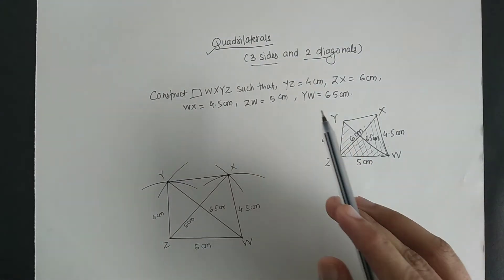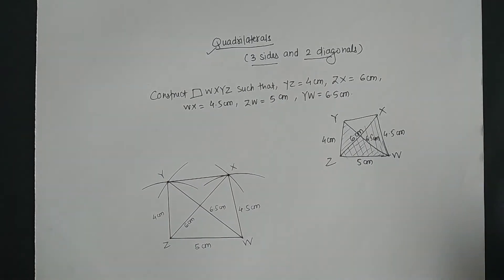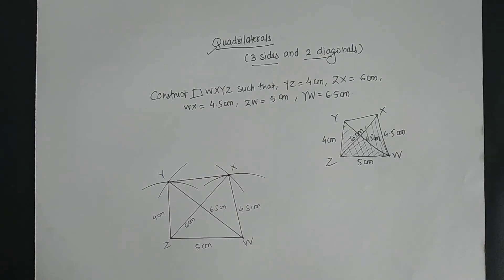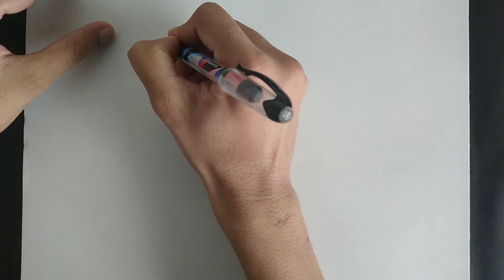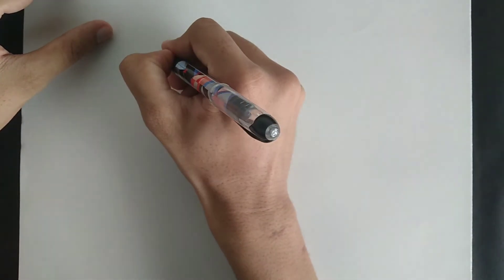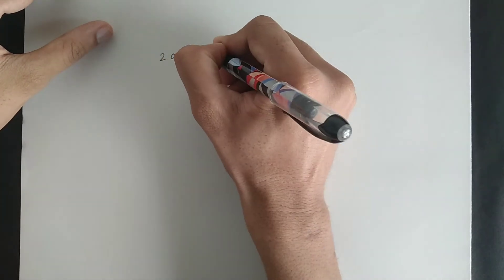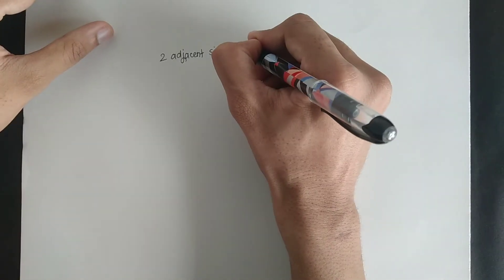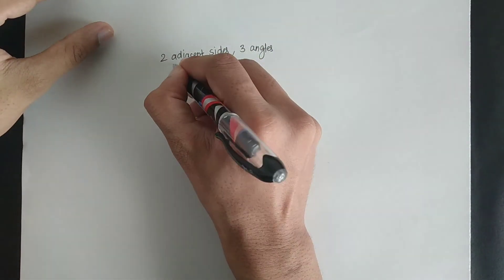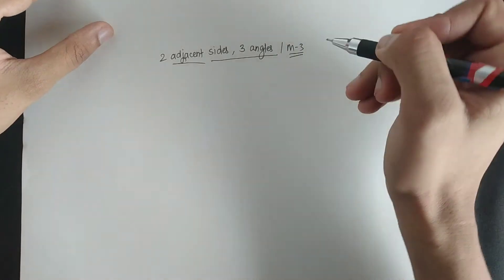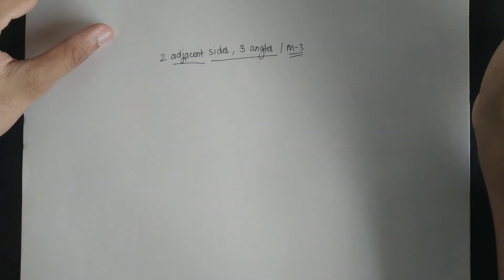This type of data leads us to Method Number Three. Now let us see how we can construct a quadrilateral with the help of an example. In this method we will have the dimension of two adjacent sides and the dimension of three angles. Let us now construct a quadrilateral using an example.